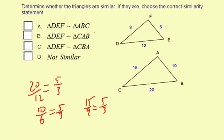Now we have to match up the letters. Let's see, D should go with C, and then E should go with B, and then F should go with A. So this is the correct similarity statement.